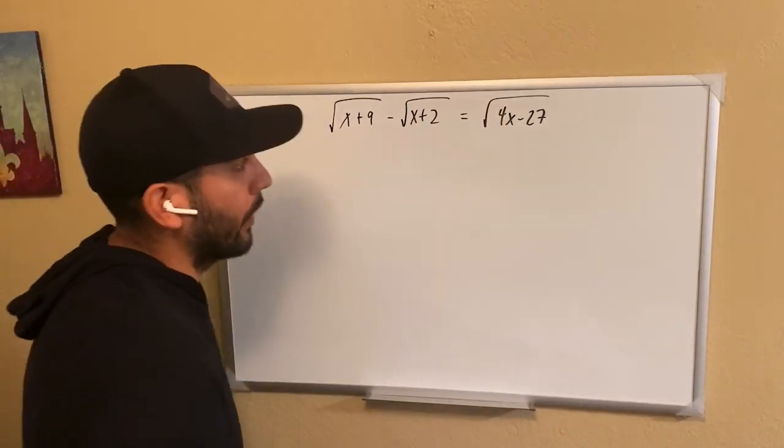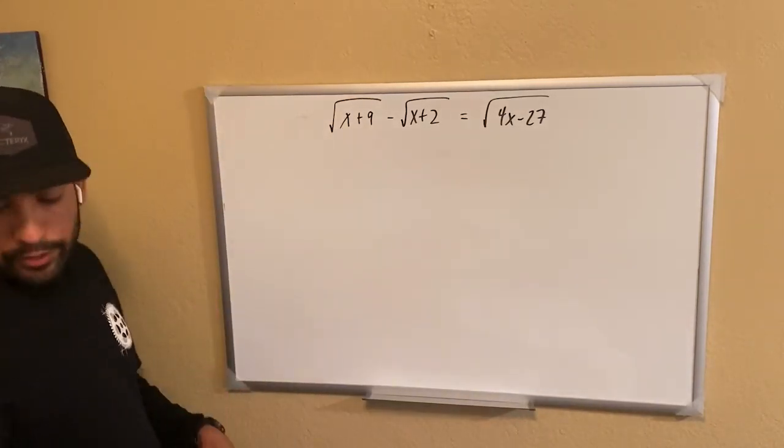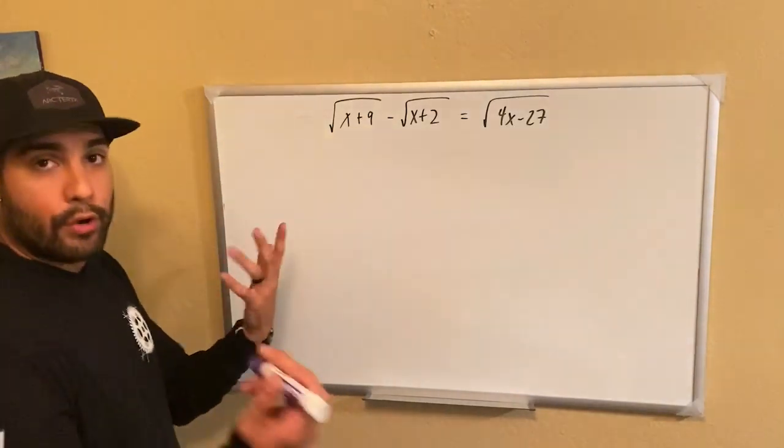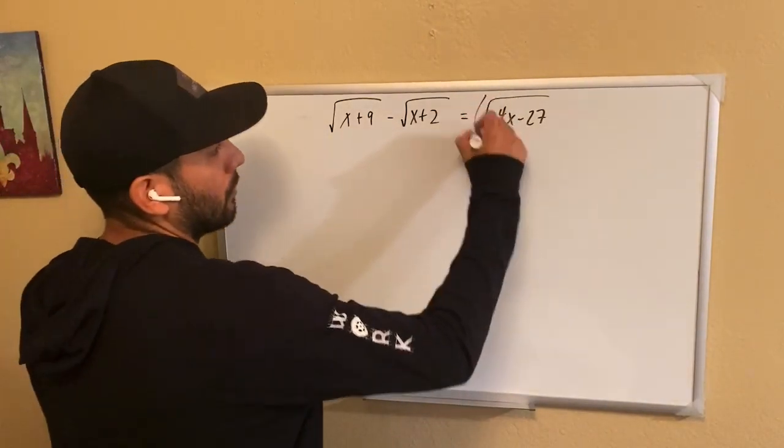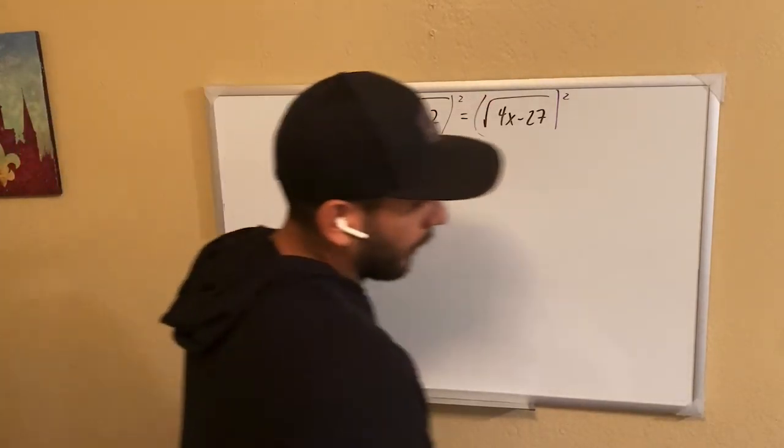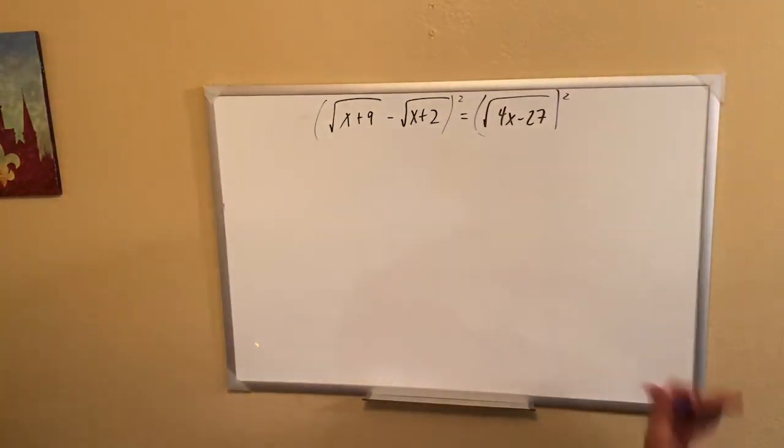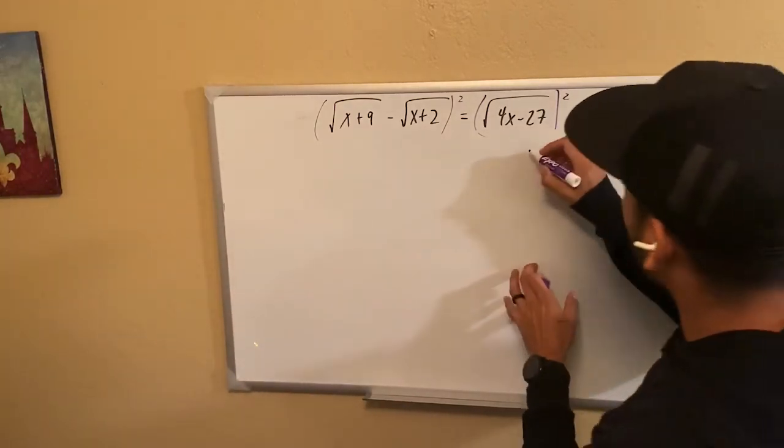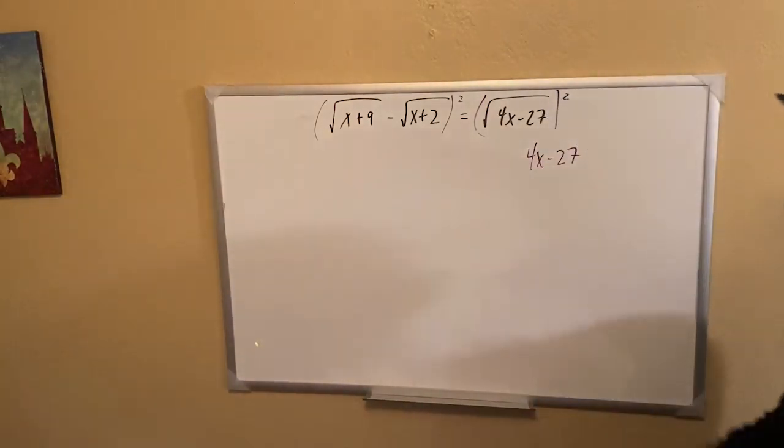And we have a radical expression on the right side. The way we want to get rid of it is we're going to have to square both sides because we want to essentially get rid of the one on the right side. Okay, now on the right side it's pretty simple. It's just going to become 4x minus 27.